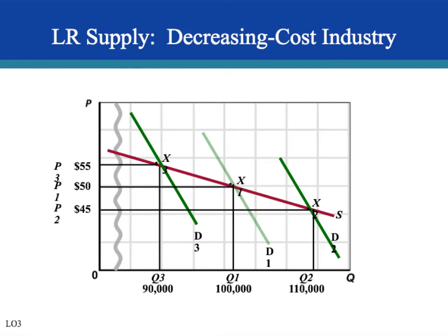In a decreasing cost industry, resources experience economies of scale when demand increases. As new firms enter and demand more resources, input costs fall due to economies of scale, causing output prices to drop. For example, at 90,000 units price might be $55, but at 110,000 units price falls to only $45.